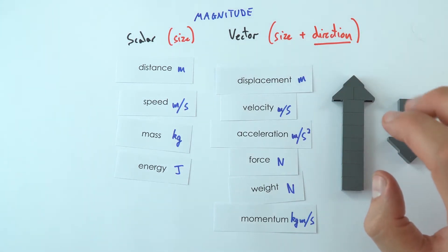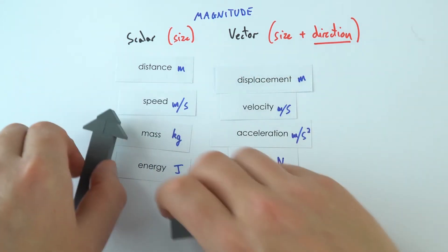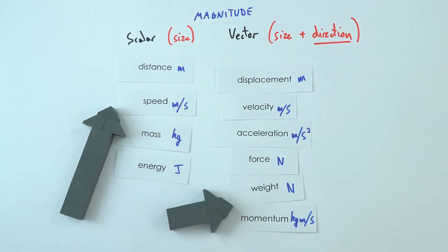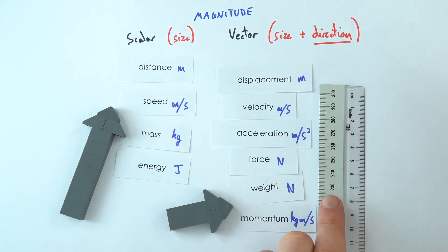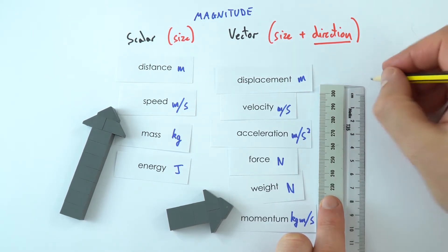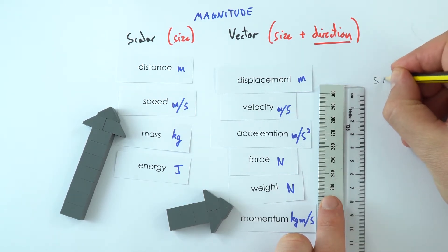So when it comes to drawing vectors, what we can do is we can draw vector diagrams - we can draw scale diagrams where we use arrows to represent it. Now it's kind of pretty straightforward, and you know this is something I'm sure your teachers might have mentioned, but if you're going to be drawing an arrow it's always best to use a ruler and a pencil just in case you make a mistake.